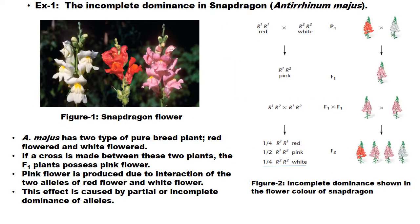This is an example of incomplete dominance found in the plant snapdragon. Its scientific name is Antirrhinum majus. It has two types of pure breed plant: red flowered plant and white flowered plant. If a cross is made between these two plants, the F1 plant possesses pink flowers. Pink flower is produced due to the interaction of two alleles of red flower and white flower, caused by partial or incomplete dominance of the alleles.